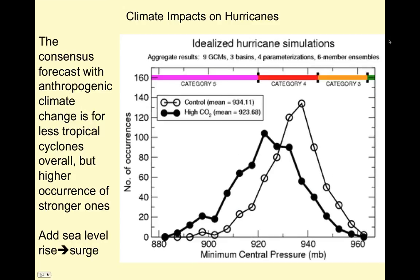Climate impacts on hurricanes: one model showed that with high CO2, surface warming, and increased sea surface temperatures, there is a reduced frequency of hurricanes overall but a tendency towards stronger hurricanes. The consensus forecast with anthropogenic climate change is for fewer tropical cyclones overall, but a higher occurrence of stronger ones. If you add in sea level rise, which is definitely happening, you could expect huge amounts of surge and impacts from these strong storms.